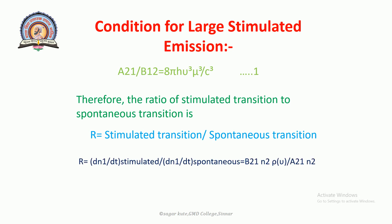R = (dN₁/dt)_stimulated / (dN₁/dt)_spontaneous = B21·N2·ρ(ν) / A21·N2. Therefore, R = (B21 / A21) · ρ(ν). This will be equation number 2.